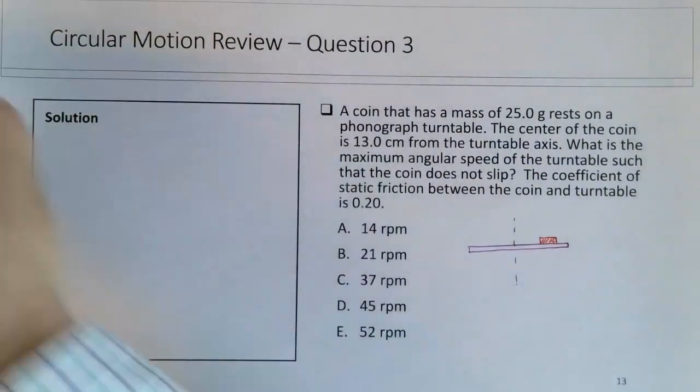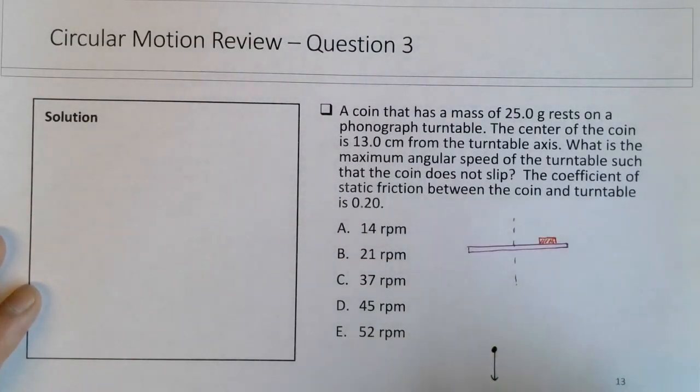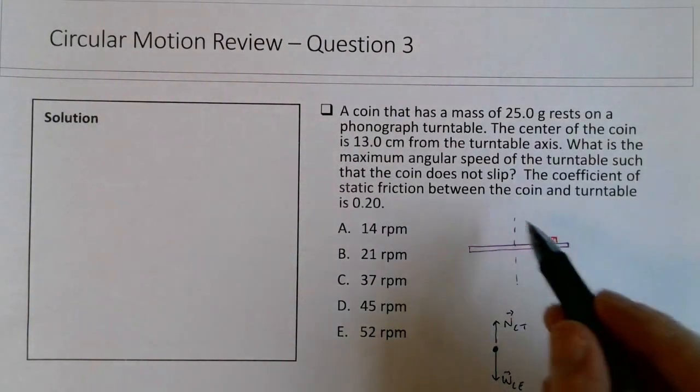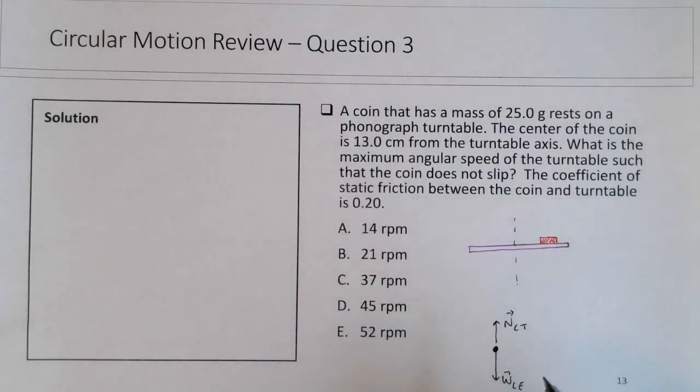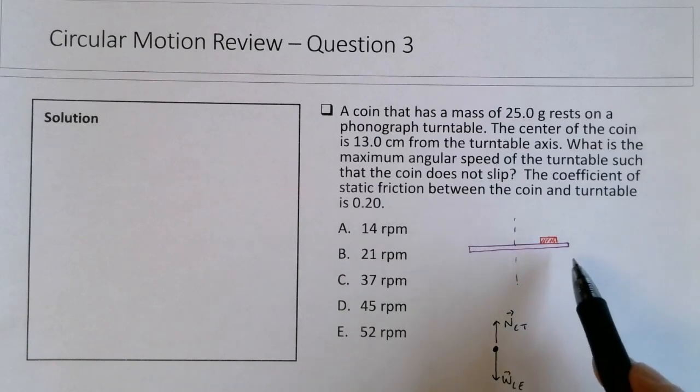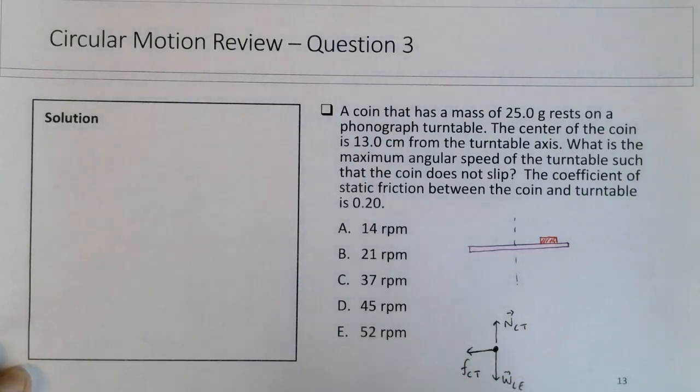If you draw a free body diagram for the coin, there is a weight force on the coin by the earth, and there is a normal force on the coin by the table. But we know that in order for the coin to be rotating, there needs to be a net force toward the center. Since the only thing that can exert a horizontal force on the coin is the turntable itself, and it has to constantly point toward the center, this particular force is a friction force on the coin by the turntable, and that's a static friction force.